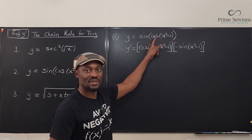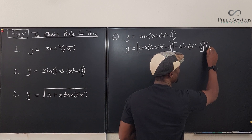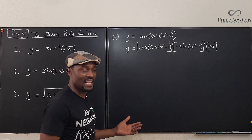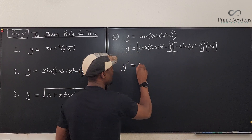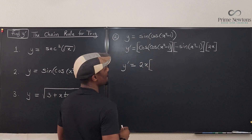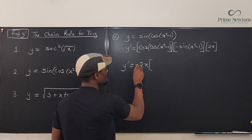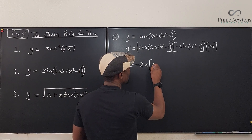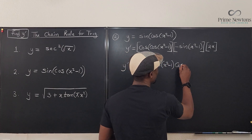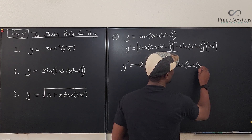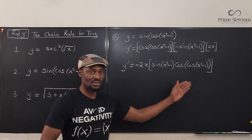I have dealt with sine and cosine. So now I need to go inside and differentiate x squared minus one, which is going to be two x. So I multiply by two x. Cleaning up, y prime is going to be minus two x times sine of x squared minus one times cosine of the cosine of x squared minus one. This is the derivative you're looking for.